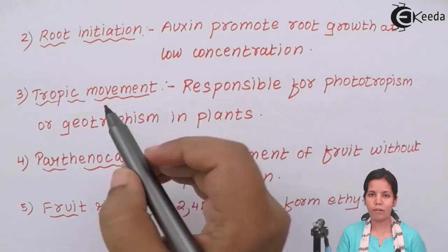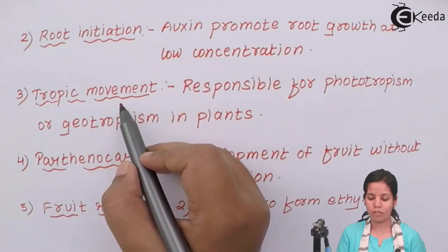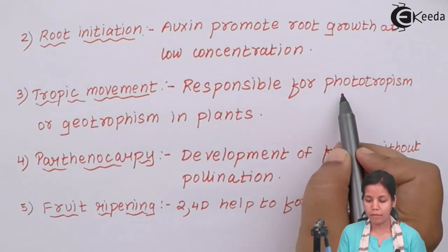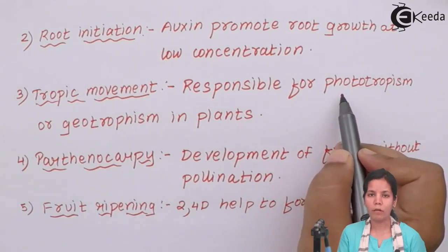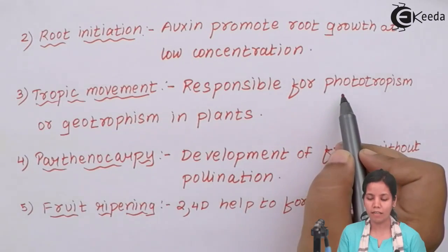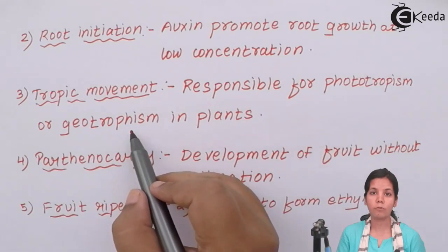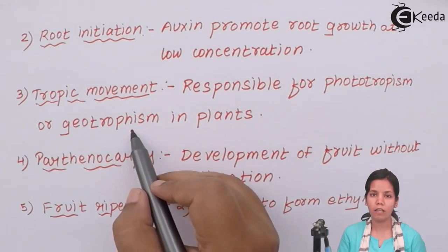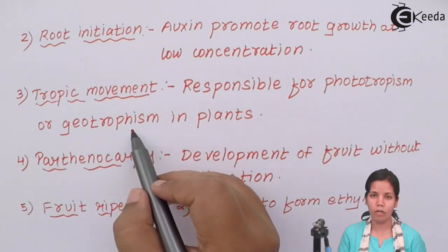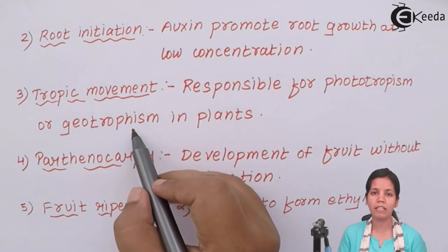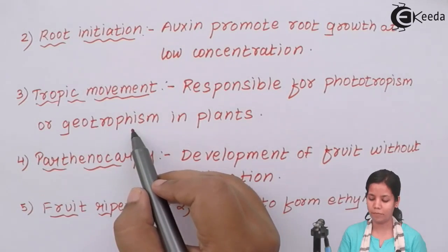The third importance of auxins is tropic movements. Auxins help in phototropism — that is, movement towards the sun — and geotropism — that is, movement towards earth, soil, or gravity — which are basic needs of a plant.